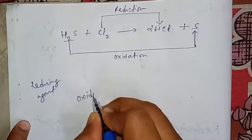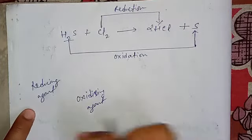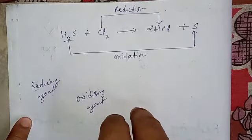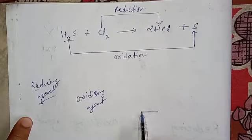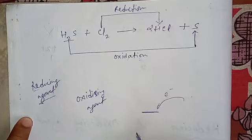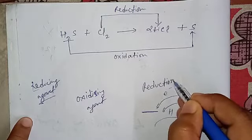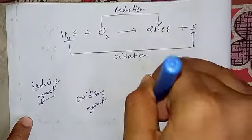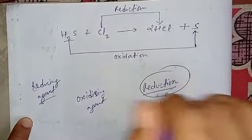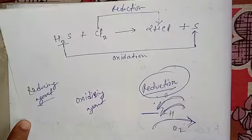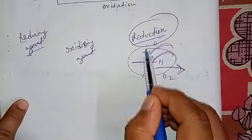Chlorine is the oxidizing agent. Just focus: reduction is the process and agent is the substance. If an element is gaining an electron, gaining hydrogen, or removing oxygen, then that substance is undergoing reduction. But an agent is a substance that helps another substance to get reduced — that is the reducing agent.